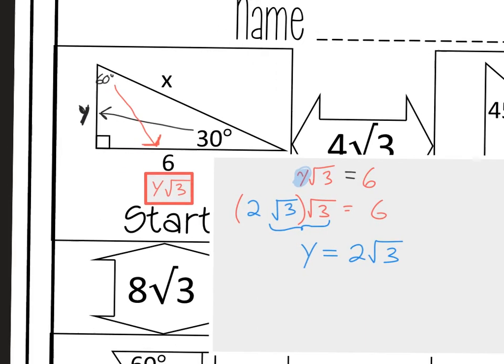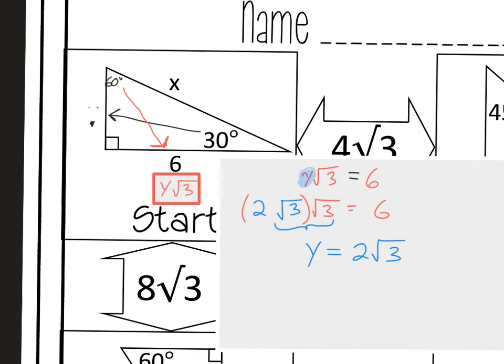OK, so if I come back to my picture over here, then I'm going to replace my Y value with 2 root 3. And notice what I'm trying to find here is X. So I'm trying to find this hypotenuse, this X value here. So I have to do a little bit more work, and I know that my hypotenuse in a 30-60-90 is going to be twice as long as the shortest side.